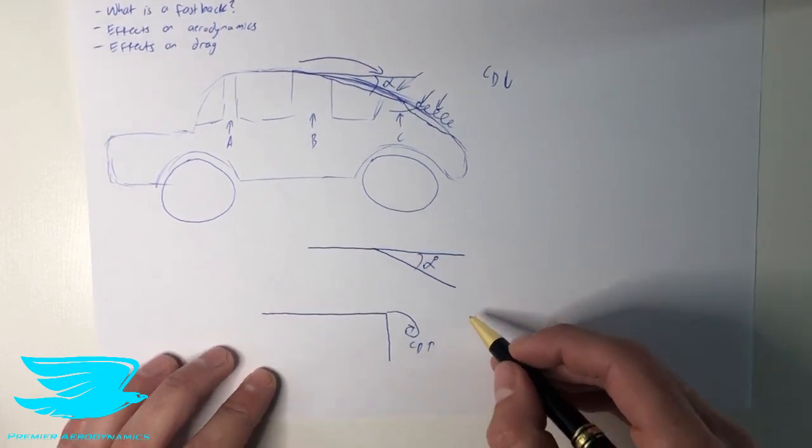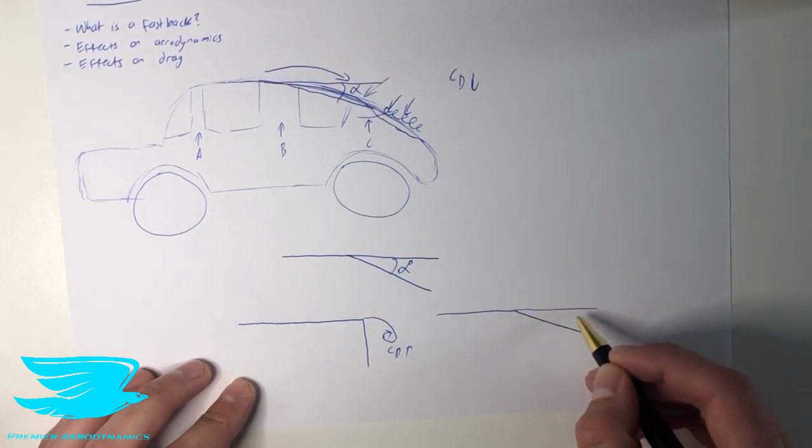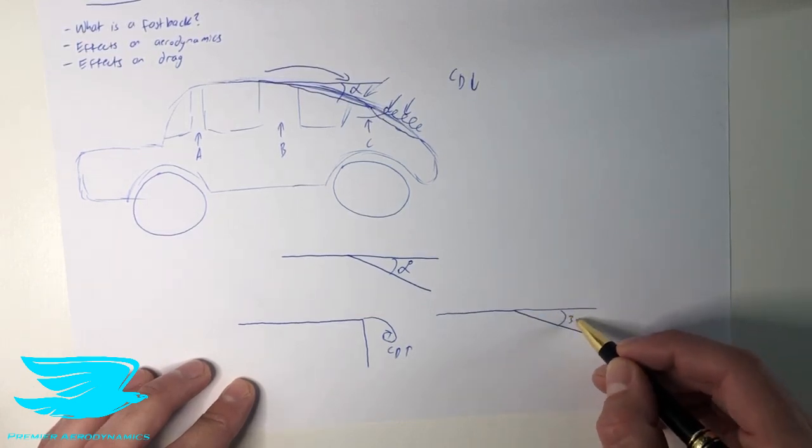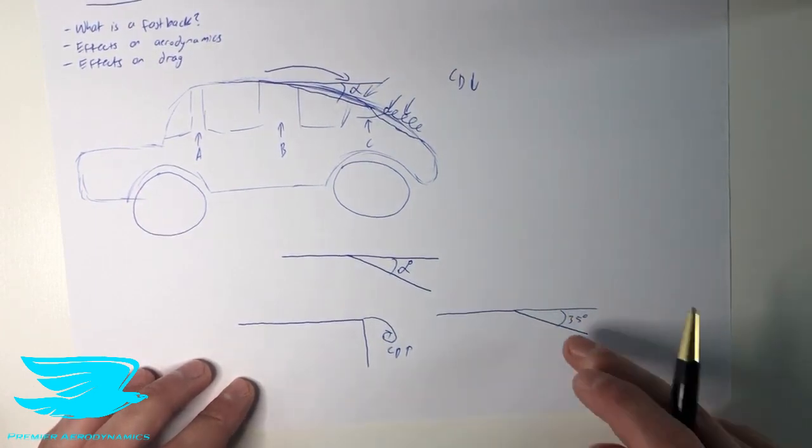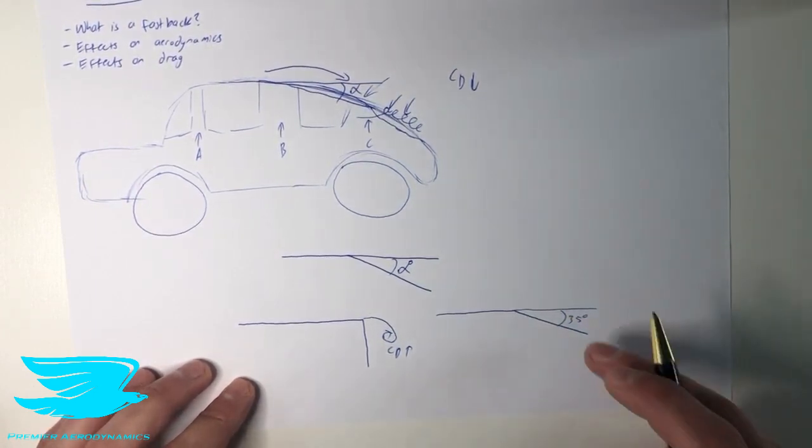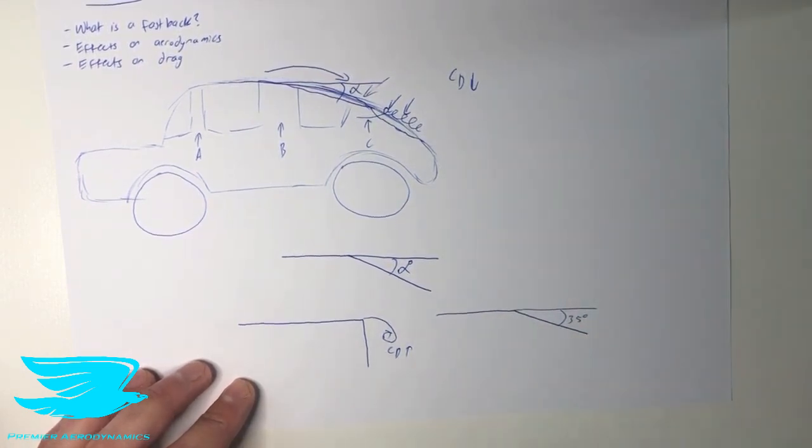Let's say we start reducing this angle. So now it's more like this. And let's say it's at about 35 degrees or so. The drag is now significantly lower, but there are no vortices present yet because the vortices need to be a little, this angle needs to be a little bit shallower before the vortices can be present.